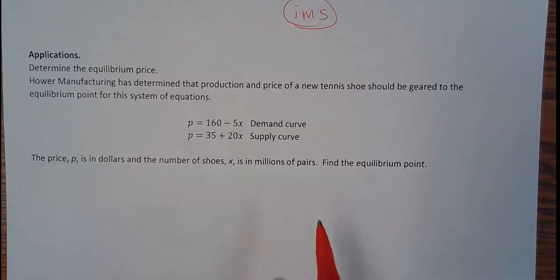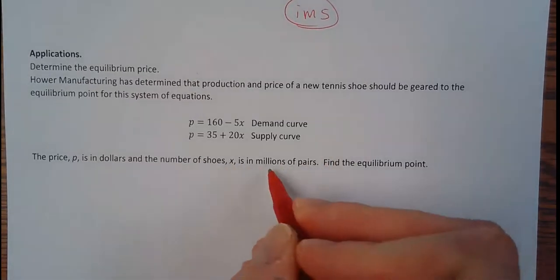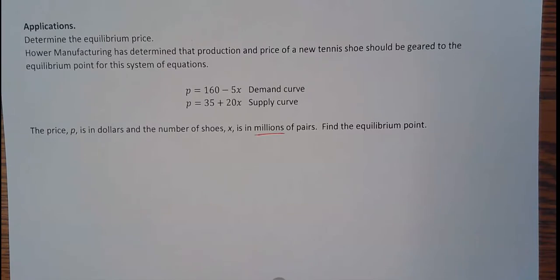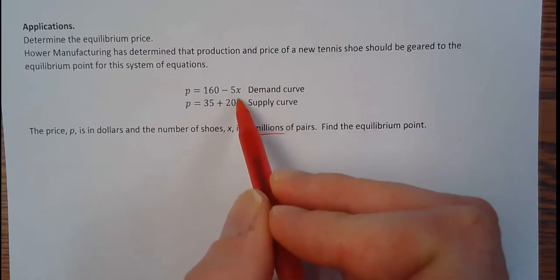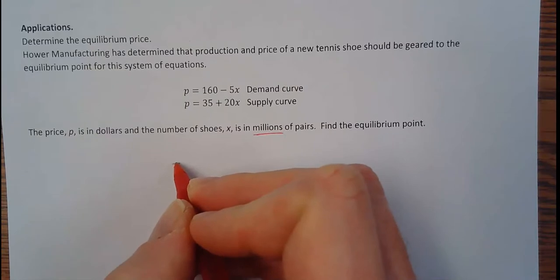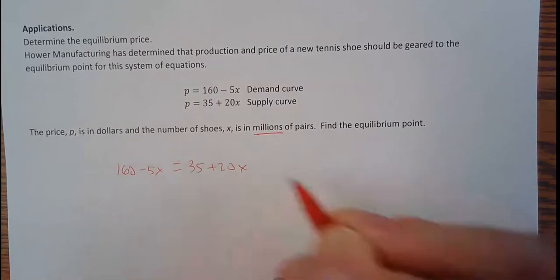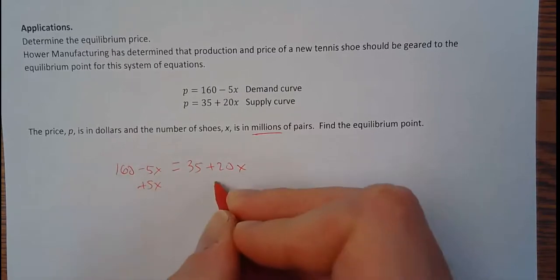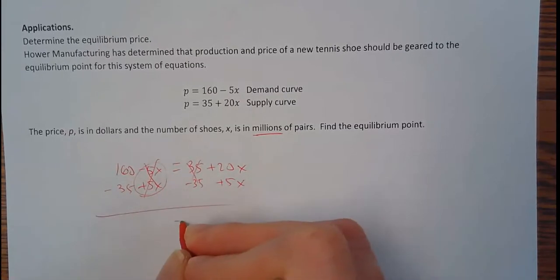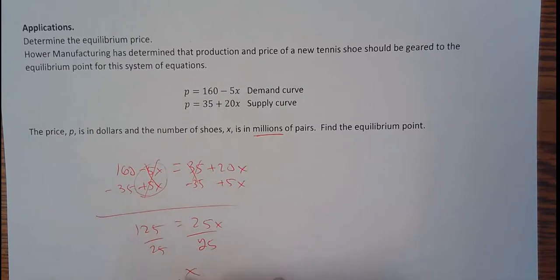Find the price P that gives me that kind of balance point. And X is in millions of pairs of shoes. So I sold a lot of shoes, a lot of tennis shoes. You never know. I'd have time to teach. But so if I want to find the equilibrium point, since they both have X values in them and they both equal P, well, this is just substitution. So 160 minus 5X equals 35 plus 20X. Get the X's together. So I want to add 5X to both sides. This is gone. I'm going to subtract 35 to get it back to the other side. This is gone. We got 25X equals 125. So 5.